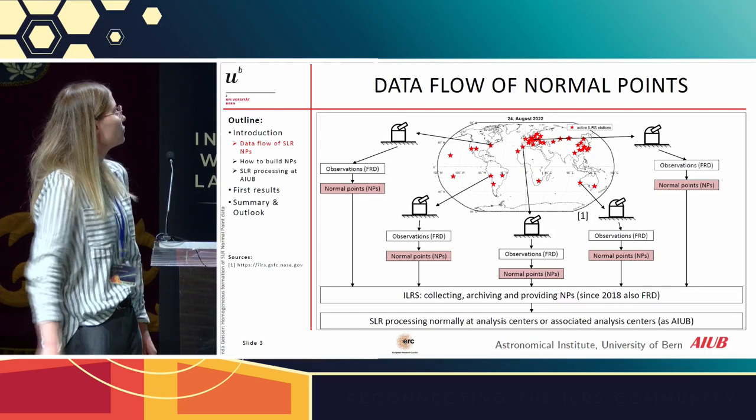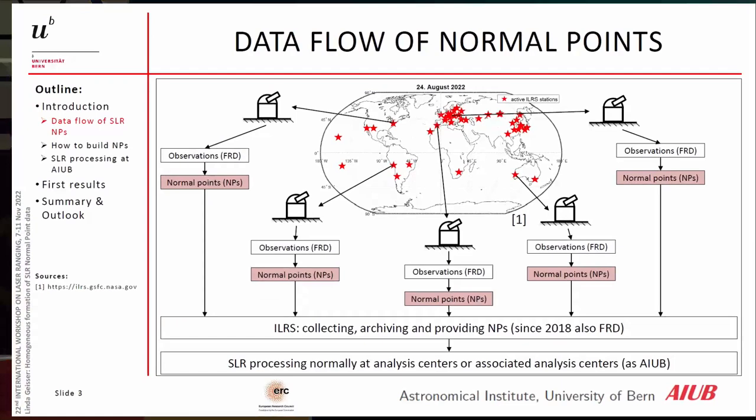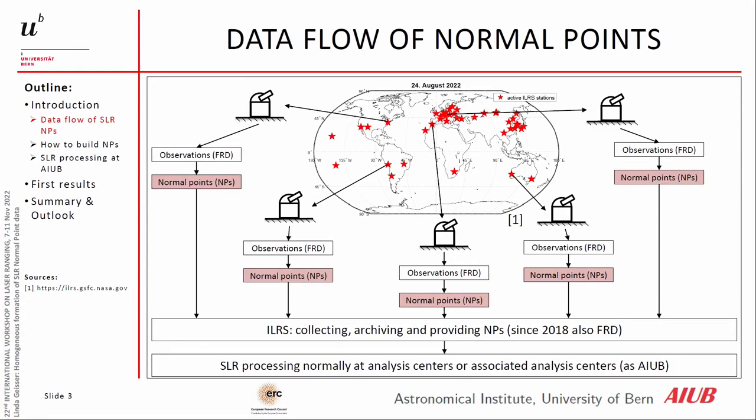First of all, to the data flow of the normal point. We have a lot of stations here — ILRS stations, active ones — and they are doing their observations. They have the so-called full rate data. To compress them, they build these normal points, which are then provided to the ILRS, who archive, collect, and provide them to the analysis centers. The analysis centers then use them for the SLR processing.